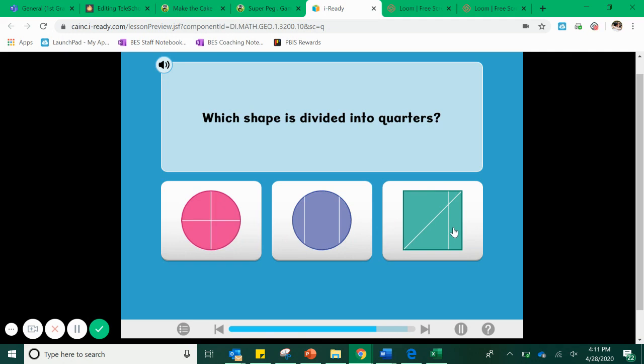We're just going to check over here with our square. One, two, three, four parts, but those are not equal. Look at the difference between this little baby triangle that is a part of this partition and this huge triangle on the bottom. Nope, that is not divided into quarters. It is our pink circle here.